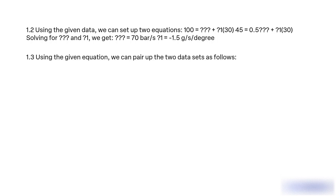1.3 Using the given equation, we can pair up the two data sets as follows: 0.5 bar, 50 grams per second; 0.9 bar, 110 grams per second, using [equation] equal to 500 plus [2 theta].